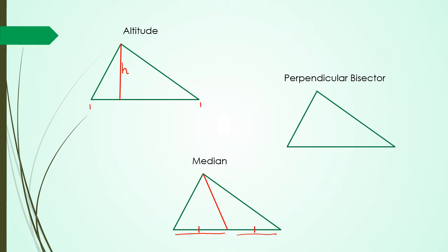The median connects the vertex to the midpoint on the opposite side. As for the perpendicular bisector, bisector means cutting the line in half — so you cut the line in half and then draw a perpendicular line through that midpoint. Remember: altitude is the height, median goes from the vertex to the midpoint of the opposite side, and the perpendicular bisector is a line going through the midpoint at a perpendicular angle. Let's have a look at some questions.